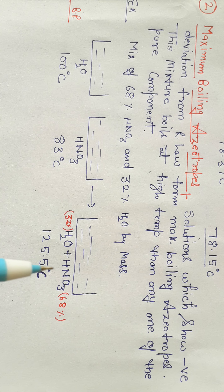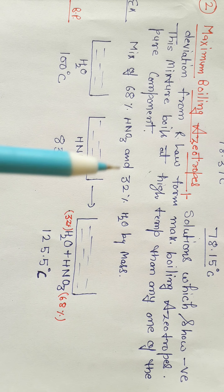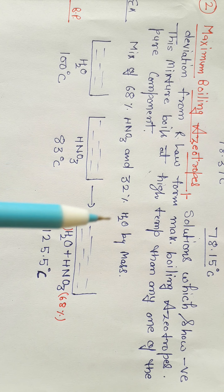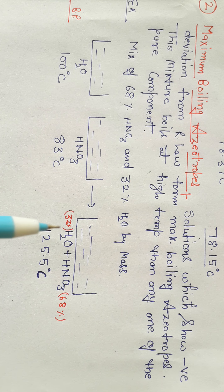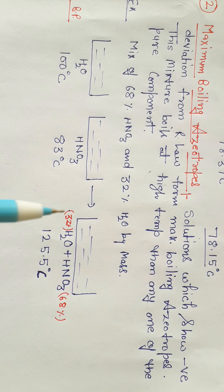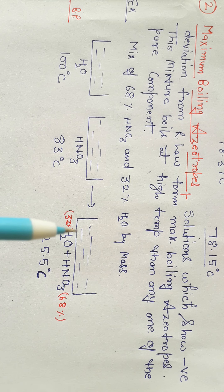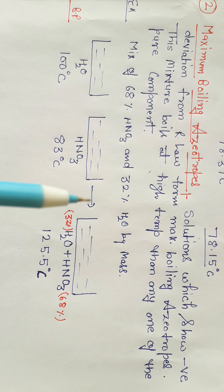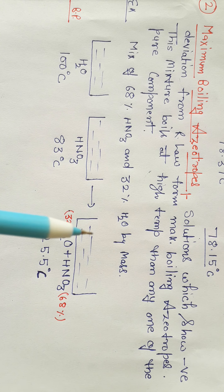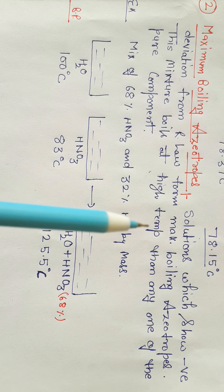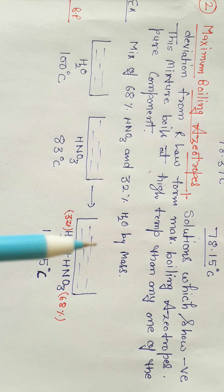Since the boiling point is very high, this mixture shows negative deviation. When both components are mixed, hydrogen bonding is created between them, which decreases the vapor pressure, causing negative deviation from Raoult's law and a higher boiling point.